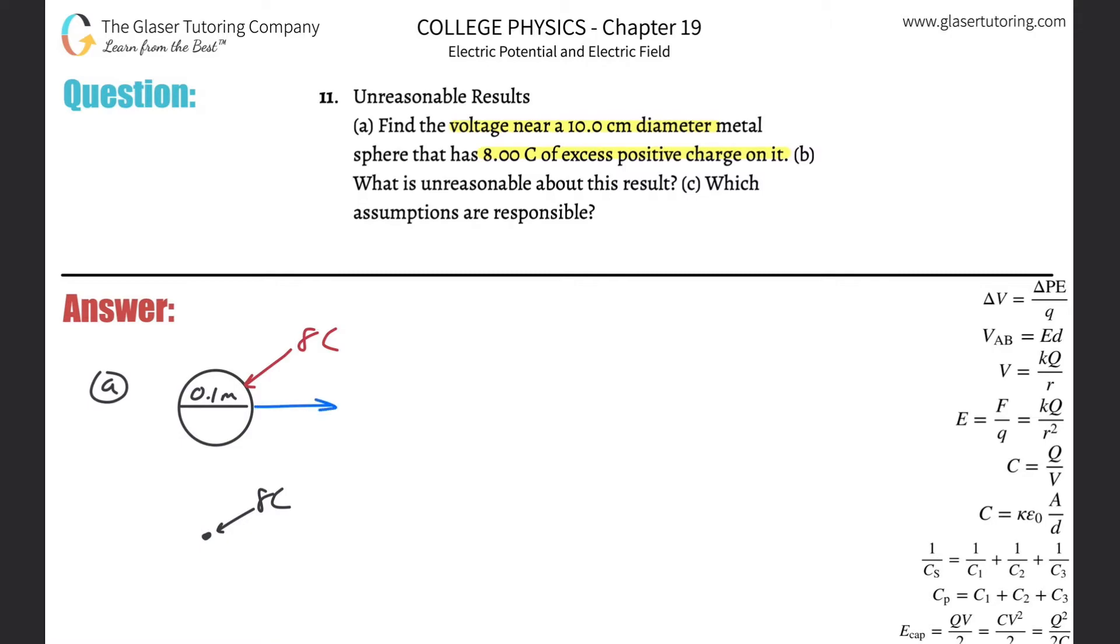But what I do know is this: the voltage at a distance to some charged object is found by the following formula. The voltage found a certain distance relative to a charge is equal to the electrostatic constant multiplied by the charge of that object, divided by the distance between that object and the point of interest.